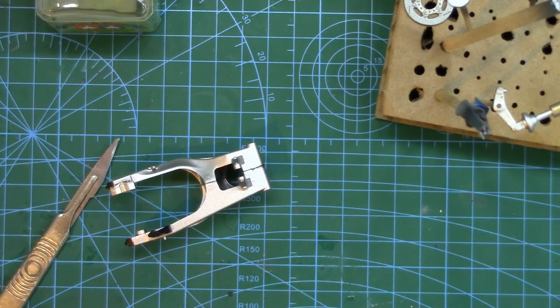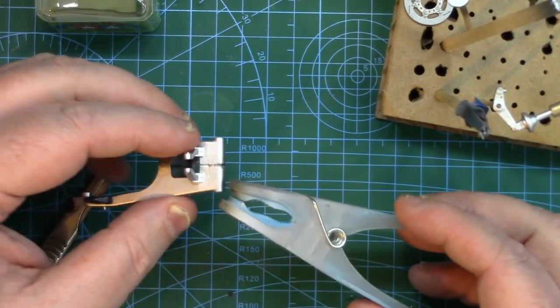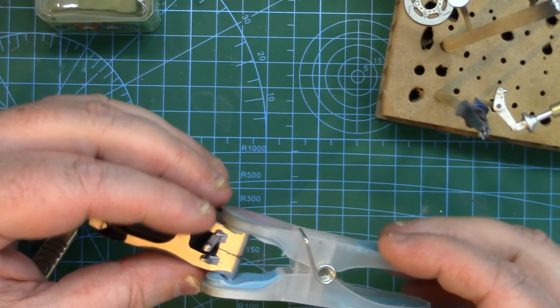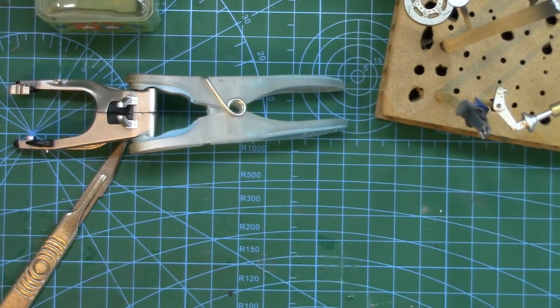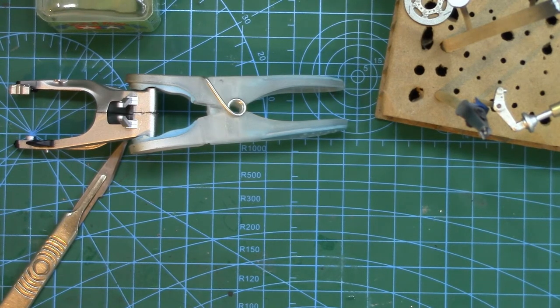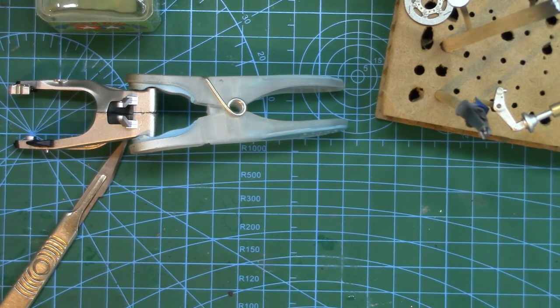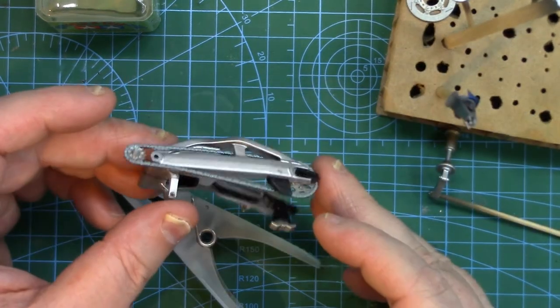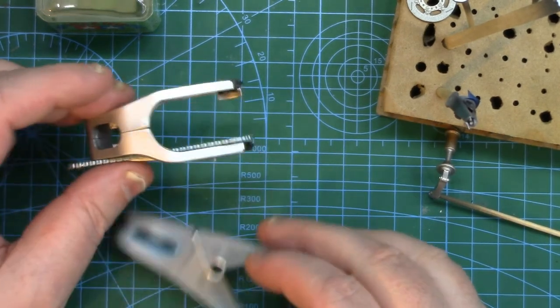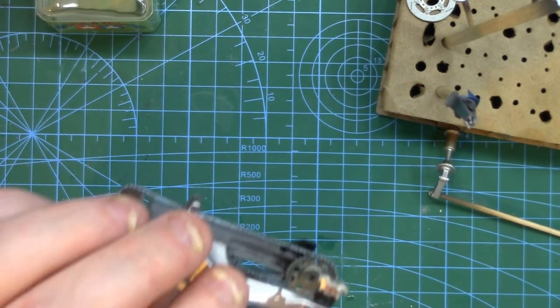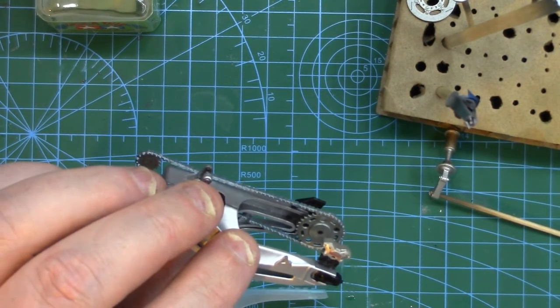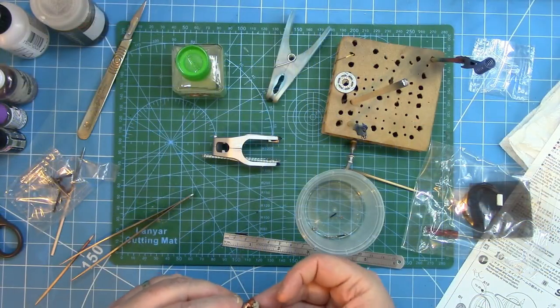I'm using some Tamiya extra thin. That's going on both sides, just run a little bit around the mating surfaces. Even if there is some remnants of paint, the Tamiya extra thin will cut through it pretty well. Those parts can get pushed together. I'm just going to bind them together using a clothes peg. That'll help make sure they're perfectly aligned and well glued together. That's set aside to cure for a number of hours. Once I'm happy with that, I can just pop in the chain. That's not glued in, that's just slotted in.